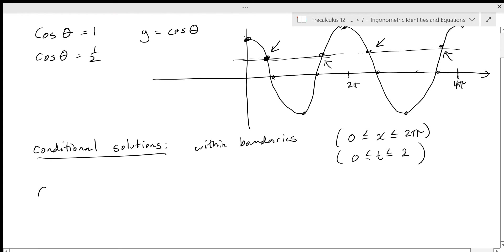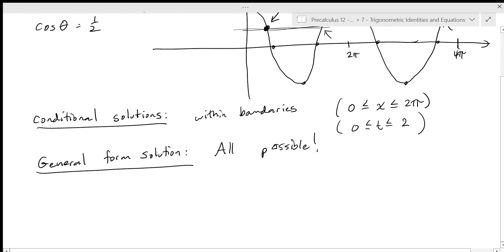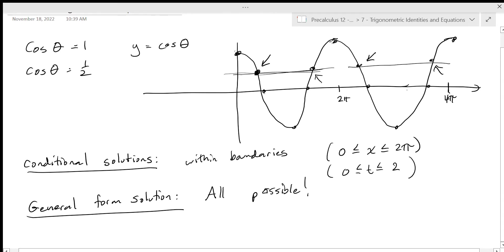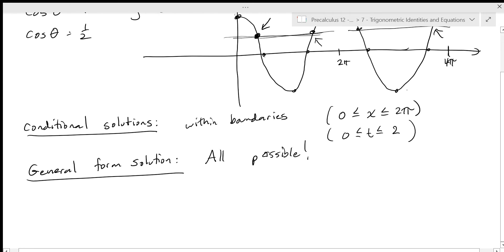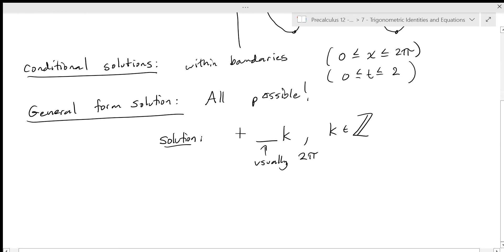Your general form solution is going to be all possible solutions, and that can be a lot. Generally, for each of your individual solutions — for example, between zero and two pi we had two solutions — each of those is generalized by adding two pi k. Usually this is going to be two pi k, but not always — that's usually when you have something like cosine of two theta equals something.